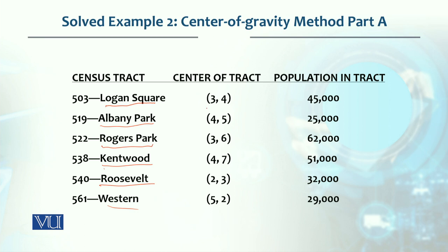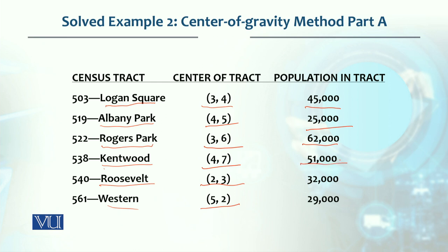We have to calculate the population to find the relative center of gravity. Logan Square is 45,000. Albany Park is 25,000. Rogers Park is 62,000. Kentwood is 51,000. Roosevelt is 32,000. And Western is 29,000.